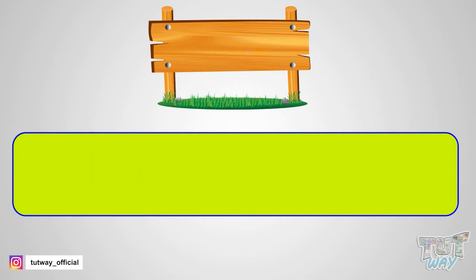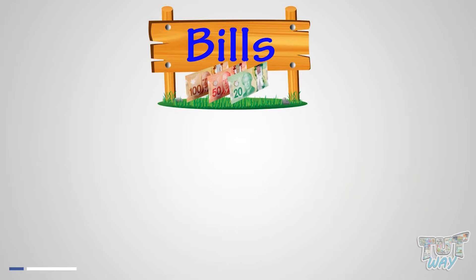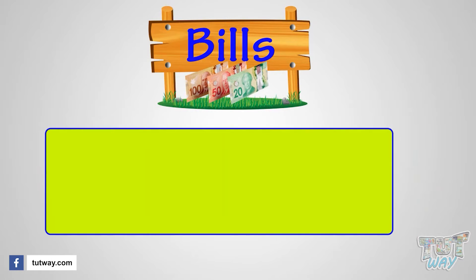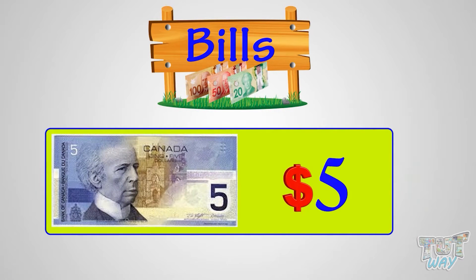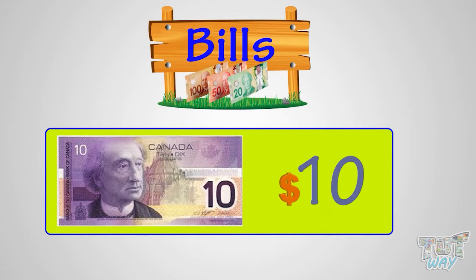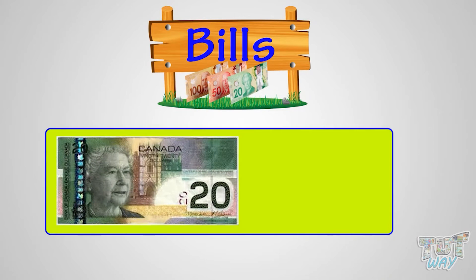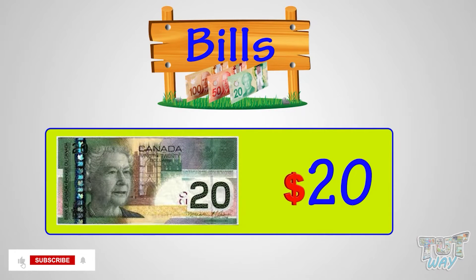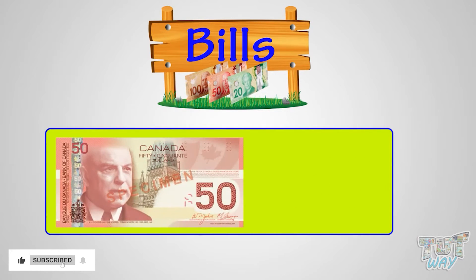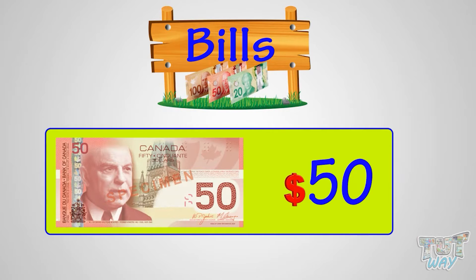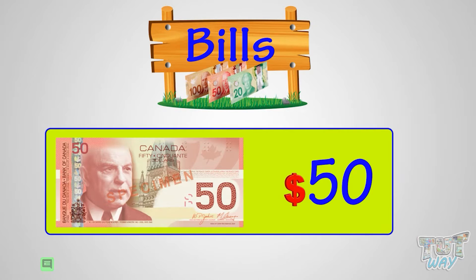Now, let's see our bills. This is a five dollar bill. This is a ten dollar bill. This is a twenty dollar bill. And this is a fifty dollar bill. We will use bills when we have to give bigger amounts.